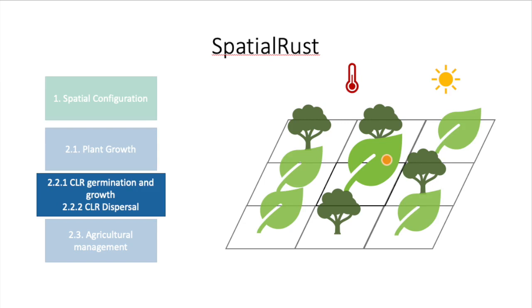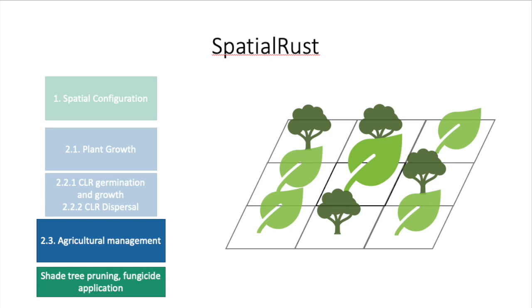Then, the next step is the coffee leaf rust germination and growth, which depend on the radiation and temperature, which in turn are affected by neighboring shade trees. And the coffee leaf rust dispersal, which depends on rain and wind conditions and can be blocked by shade trees.